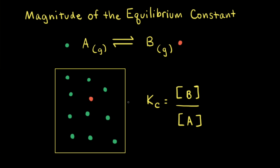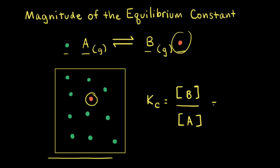Let's look at another hypothetical reaction where gas A turns into gas B. This time gas A is green and gas B is red. Kc equals the concentration of B over the concentration of A. It's faster to simply count particles: for B, there is 1 red particle, and for gas A there are 10 particles. So 1 divided by 10 equals 0.1 — Kc equals 0.1 for this reaction at a certain temperature.